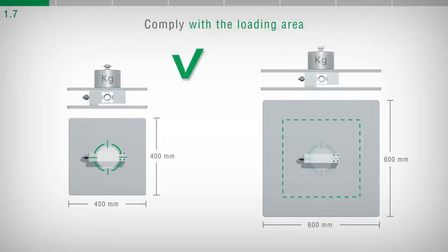By installing a structure with a larger size than that stated on the data sheet, or by applying an object that protrudes from the structure, it is possible to damage the single-point load cell and obtain an incorrect weight value.